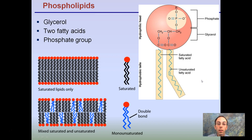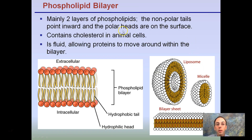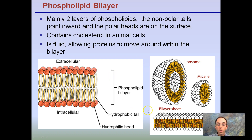Looking at the details: we have our hydrophilic head and our hydrophobic tails. Remember saturated and unsaturated fatty acids from our macromolecules, and our hydrophilic head is the phosphate and glycerol. If saturated, everything is single bonds and the tails are very straight. If mixed with unsaturated, the double bond forms a kink in the tail. The phospholipid bilayer has two layers of phospholipids — the nonpolar tails point inward and the polar heads are on the surface. It's fluid, allowing proteins to move around within the bilayer. Those proteins we saw are not fixed — they can move through the phospholipid bilayer and form sheets or vesicle-like structures.